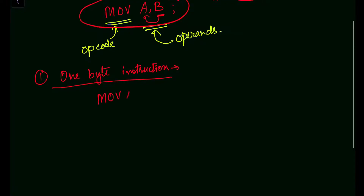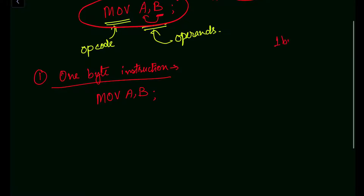The complete instruction MOV A, B is contained in one byte of data. One byte in the 8085 represents eight bits of data, because the 8085 microprocessor has a data bus width of eight bits. Therefore, eight bits of data is called one byte. One byte equals eight bits.